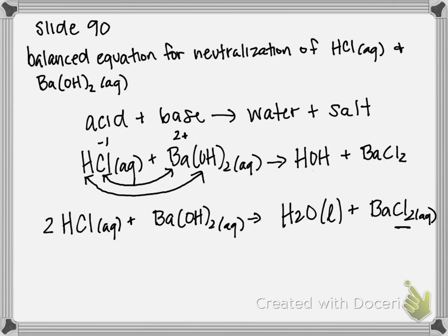And now I'm going to count up barium, both have one. Hydrogen, we have 2 HCls and two hydrogens from the hydroxide on the reactant side. So that's a total of four. We only have two on the product side, so that means I'm going to put a two in front of my H₂O.